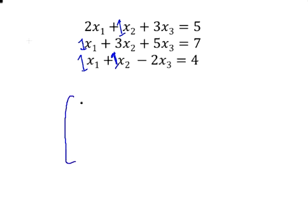In the first column we would have 2, 1, and 1. In the second column we're going to have 1, 3, and 1. And finally in the last column we would have 3, 5, and minus 2. Just be careful to be mindful of the signs, the plus sign and the minus sign.